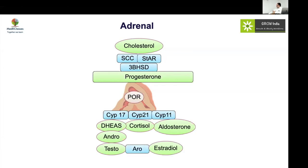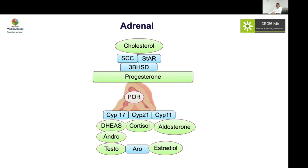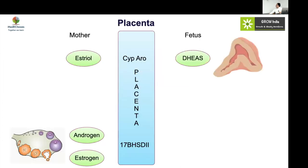POR (P450 oxidoreductase) controls three major enzymes — 21-hydroxylase, 17-hydroxylase, and aromatase — so POR deficiency also causes XX DSD. To summarize adrenal enzyme defects: 3β-HSD causes salt wasting with DSD; 21-hydroxylase causes salt wasting with DSD; 11-hydroxylase causes hypertensive DSD; aromatase deficiency causes normal salt status with DSD; and POR causes salt wasting with DSD. Sodium status combined with DSD pattern guides the diagnostic direction.